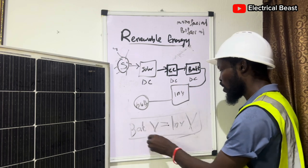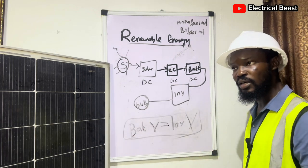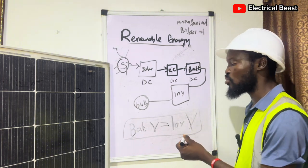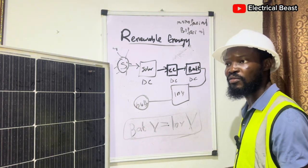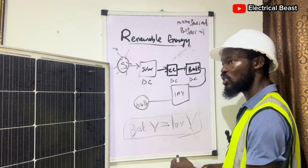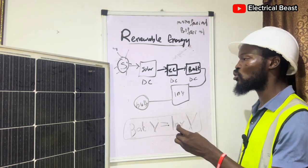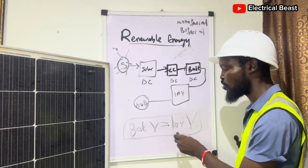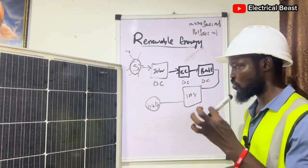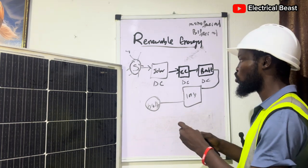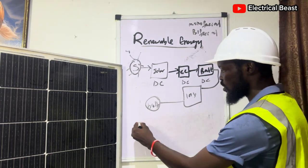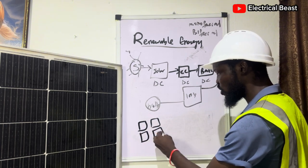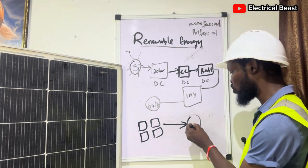That is a very important point — the battery voltage must be equal to the inverter voltage. Regardless of the capacity of the inverter, whether it's 1 kVA, 2 kVA, or 3 kVA, the voltage is the most important parameter. Also important: for your charge controller, the solar panels are connected in such a way that they match the technical parameters of the charge controller.